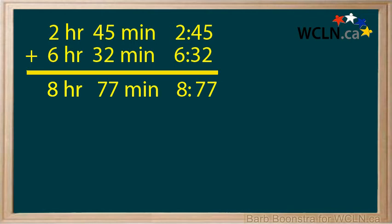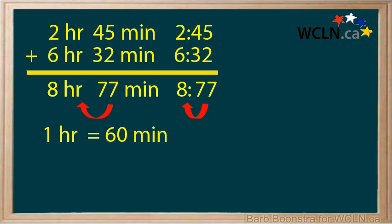Now there is a problem. 77 minutes is more than an hour. Take 60 minutes and convert that into 1 hour and add it to your hours. This will leave 17 minutes. The answer will be 9 hours and 17 minutes.